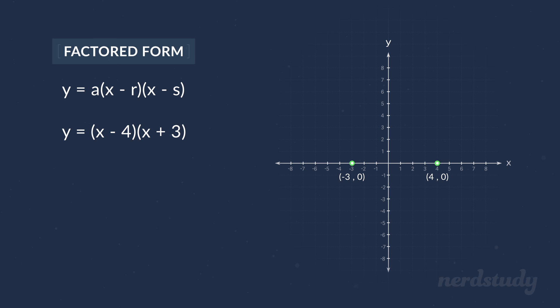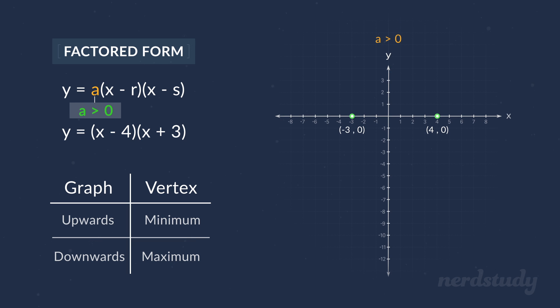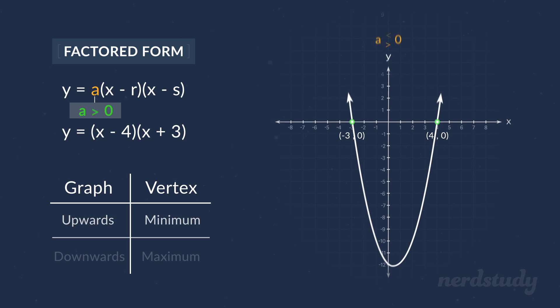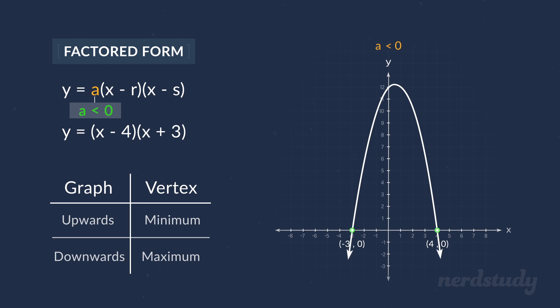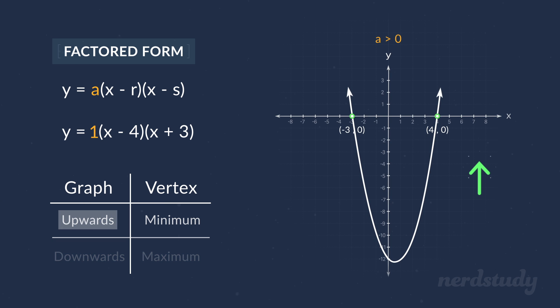Great, and as usual the a over here helps us to realize if the graph is pointing upwards with a minimum vertex or downwards with a maximum vertex. If a is positive, then we're looking at a graph that opens upwards. If a is negative, then we're looking at a graph that opens downwards. So in our example that we have here, our a is positive 1, so we can tell that the graph will be pointing upwards with a minimum vertex and will generally look like the graph that we have drawn here.